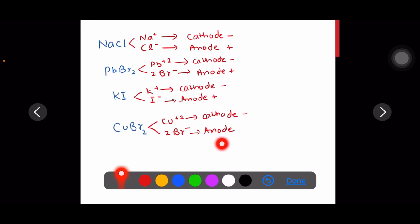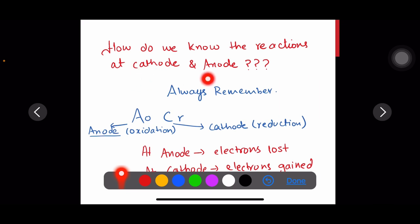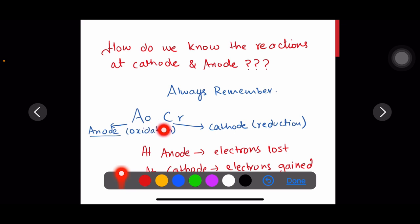Now let us see the equations at the electrodes. Always remember that at the cathode, reduction takes place, and at the anode, oxidation takes place. Learn this short word: AOCROC — Anode is for Oxidation or loss of electrons; Cathode is for Reduction or gain of electrons.